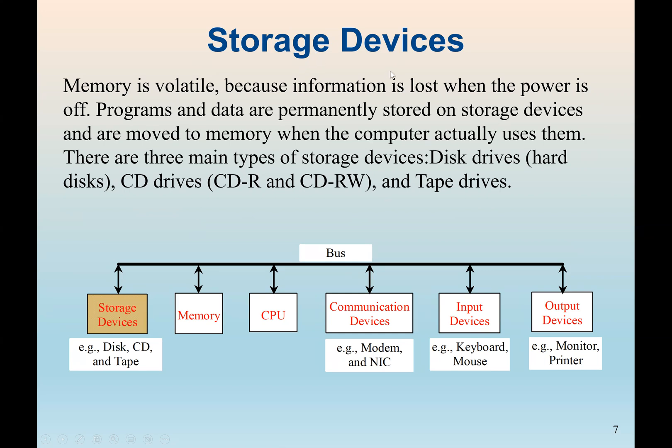So again, memory is volatile because information is lost when the power is off. So a permanent storage device would be, for example, the hard drive, CD, or flash drive. So here we say programs and data are permanently stored on storage devices and are moved to memory when the computer actually uses them. Because again, the CPU only has access to data and programs from the memory.